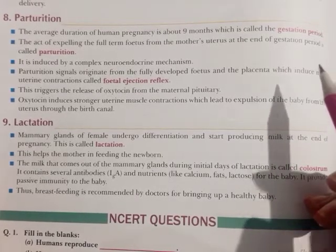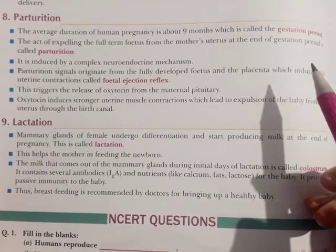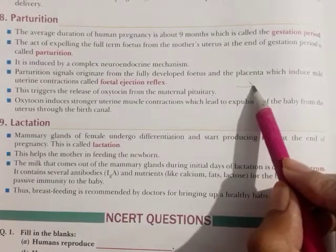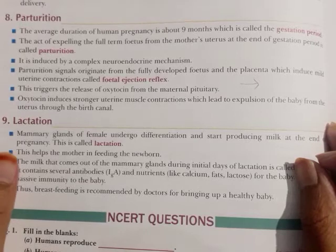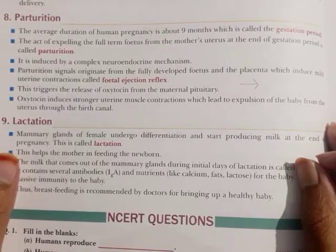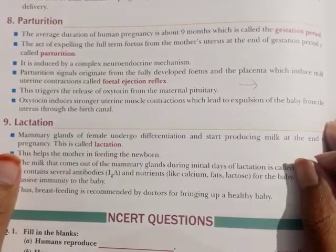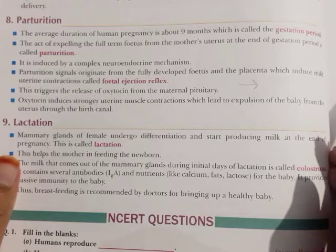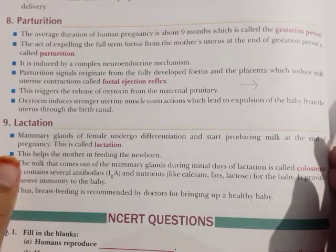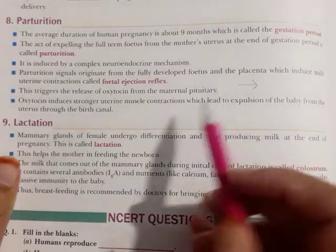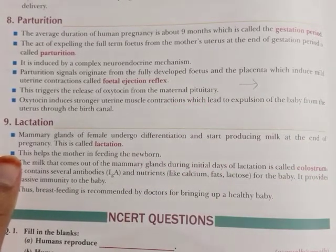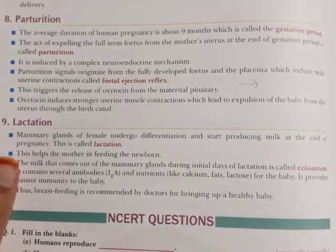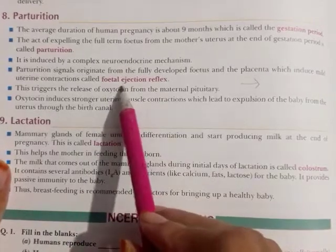When the fetus is fully developed and the placenta is developed, it signals the uterine wall. The wall of the uterus is called the myometrium, and it will start contracting. When the fetus and placenta are developed, they signal the myometrium to start contraction. We call this process the fetal ejection reflex.